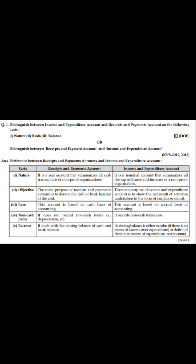On the basis of balance, Receipt and Payment Account ends with the closing balance of cash and bank, while Income and Expenditure Account ends with either a surplus or a deficit. After preparing the Receipt and Payment Account, the balance you get is the cash or bank balance. After preparing the Income and Expenditure Account, the balance may be either surplus — if income exceeds expenditure — or deficit, if expenditures are more than income.